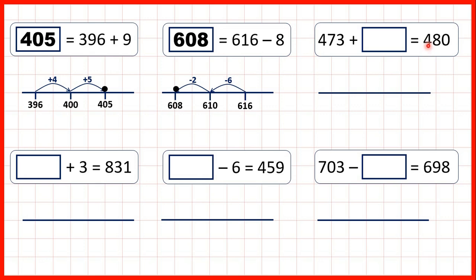We could work out 480 minus 473, and that would give us our missing number. But because the numbers in our question are close to each other, it's probably easier for us just to think how many more do we need to count on. To get from 473 to 480, we just need to add 7, so our missing number is 7. That's because 3 and 7 make a number bond to 10, so take us to the next multiple of 10.